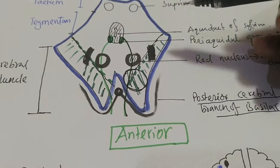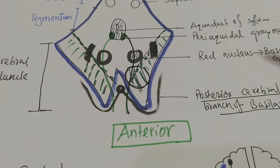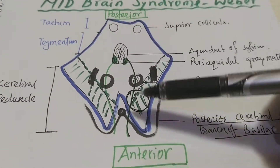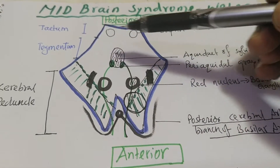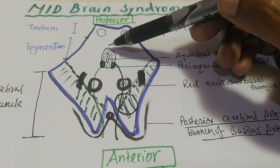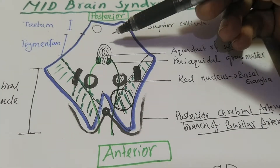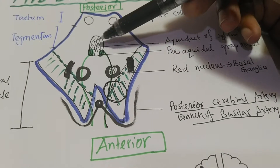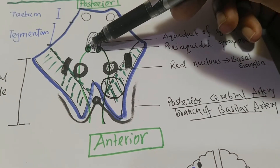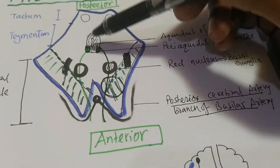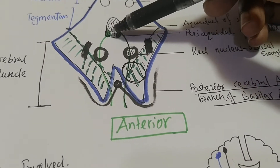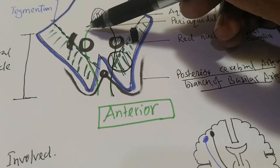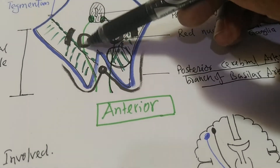This is the graphical representation of the midbrain — the axial section at the level of the superior colliculus. This is the posterior part and this is the anterior part of the midbrain. These are the superior colliculi. In the dorsal and central part is the aqueduct of Sylvius, and around the aqueduct of Sylvius is the periaqueductal gray matter. Anteriorly within the gray matter, the third cranial nerve nucleus is located, and from the third cranial nerve nucleus on each side, the fibers emerge and go anteriorly. Very anteriorly, this is the red nucleus.